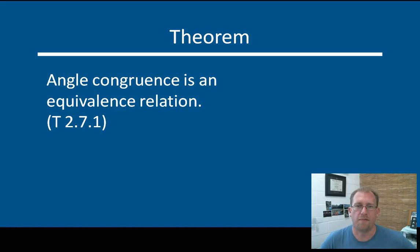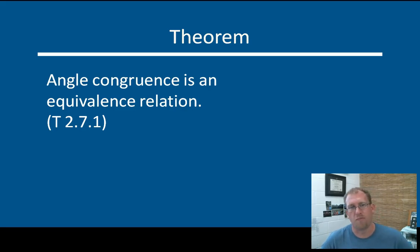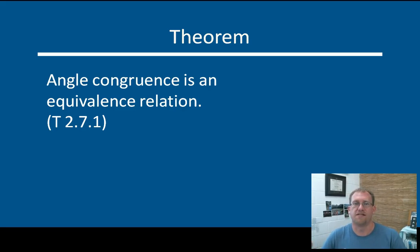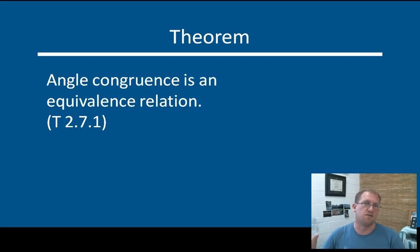The first thing we need to establish is that angle congruence is an equivalence relation, meaning all of the equivalence properties that you know about — the commutative property, the reflexive property, the transitive property — those all work with angles. So if we say that angle A is congruent to angle B, then all the things that you know about equal values and equivalent statements apply to those two angles. You could use them in any statement with an equal sign that you could use some kind of other mathematical entity, like a variable or a number.